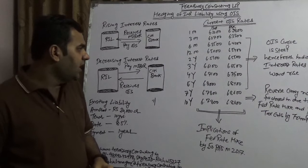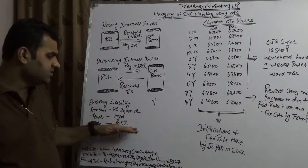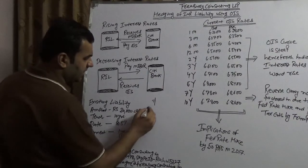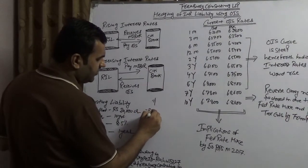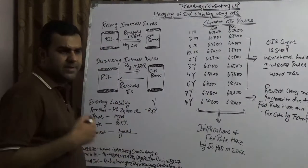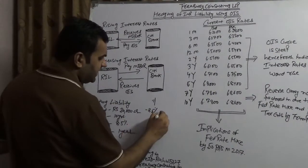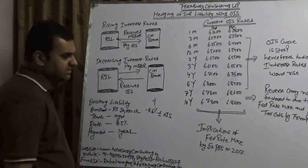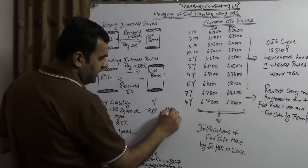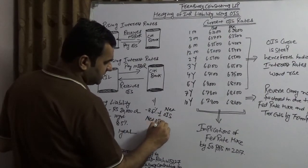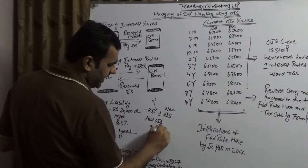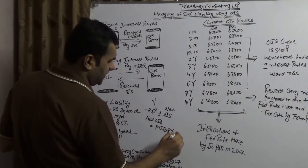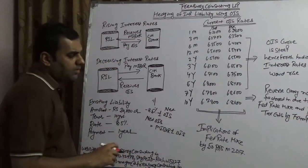The question is: should Reliance go with this? The net benefit Reliance would be getting equals minus 8.5% — what they are paying on their existing liability — plus or minus the benefit of OIS they are getting, which is the net OIS. Net OIS equals MIBOR plus or minus the overnight index fixing.